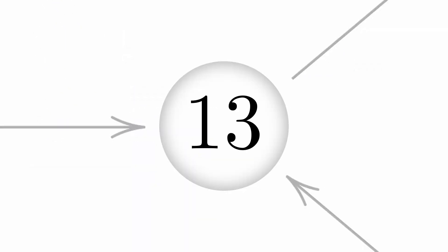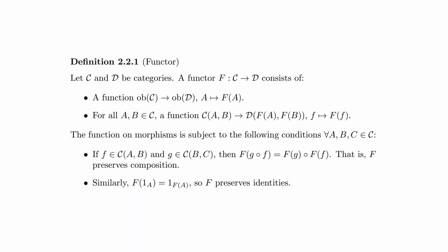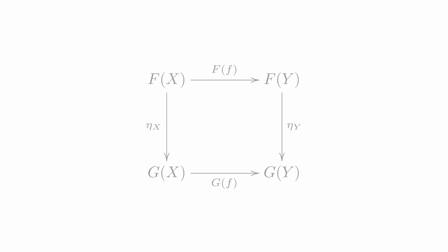Fact 13: Remember functors? They're maps between categories. But what about maps between functors? Mind-blowing, I know, right? These are called natural transformations. Natural transformations require that all diagrams of this form commute. Simple.